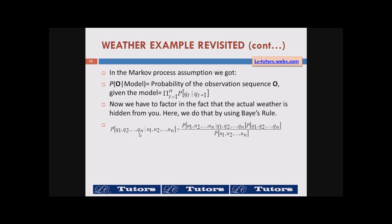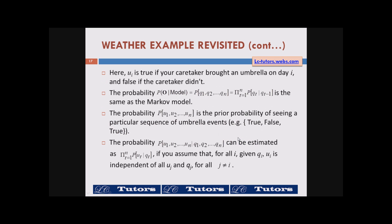The probability P(A|B), where B are the observations, can be calculated using P(B|A) × P(A) / P(B). Here, Ui is the observation — it is true if the caretaker brought an umbrella on day i, and false if the caretaker did not. So there is an event Ui depending on the umbrella observation: if there is an umbrella it is true, if there is no umbrella it is false, with a base probability of 0.5.